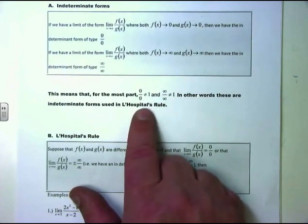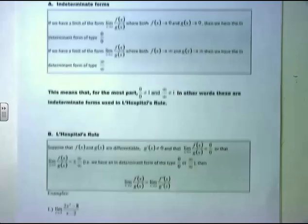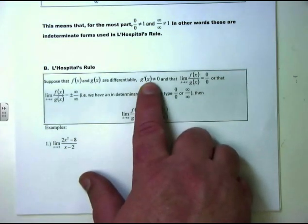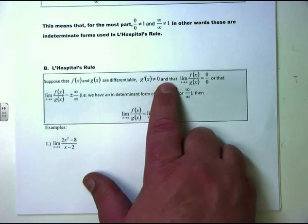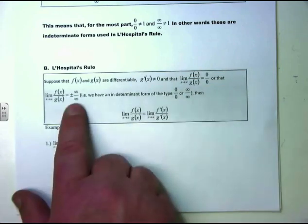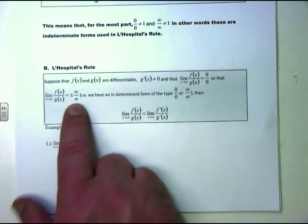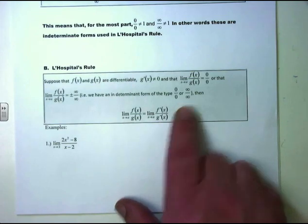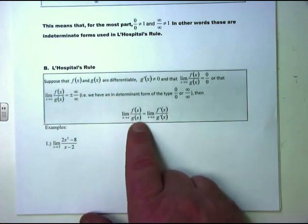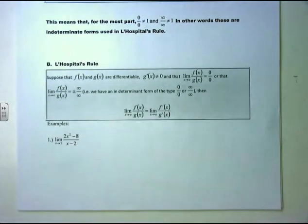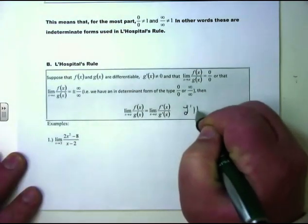We're going to use L'Hôpital's rule now. Suppose f(x) and g(x) are differentiable, and most importantly, g′(x) does not equal 0. When we take the limit as x approaches a of f(x)/g(x) and get 0/0 or ±∞/∞, then the limit of f(x)/g(x) equals the limit of f′(x)/g′(x). That is L'Hôpital's rule.